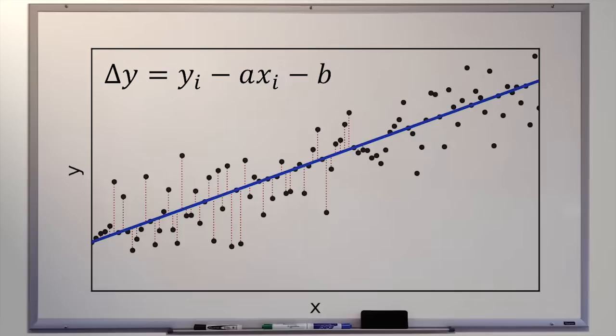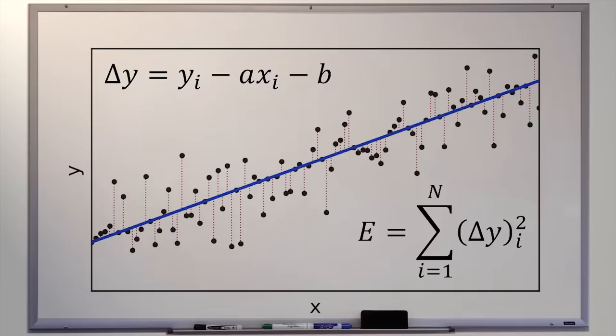It's all about those residuals. The most broadly applicable approach is the method of least squares: our measure of error is calculated by adding up the squares of all our residuals. For each residual, we square it and then add up all those numbers — that is our error number. Some people call this an objective function, but I like to call it the error metric, because the objective of the problem is to minimize the function.